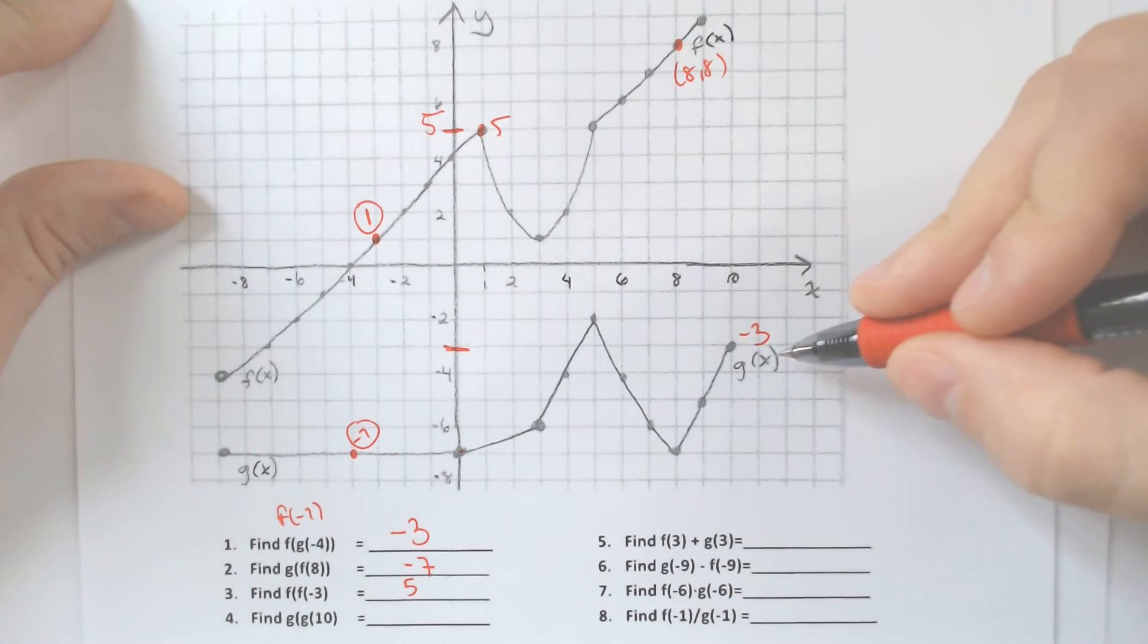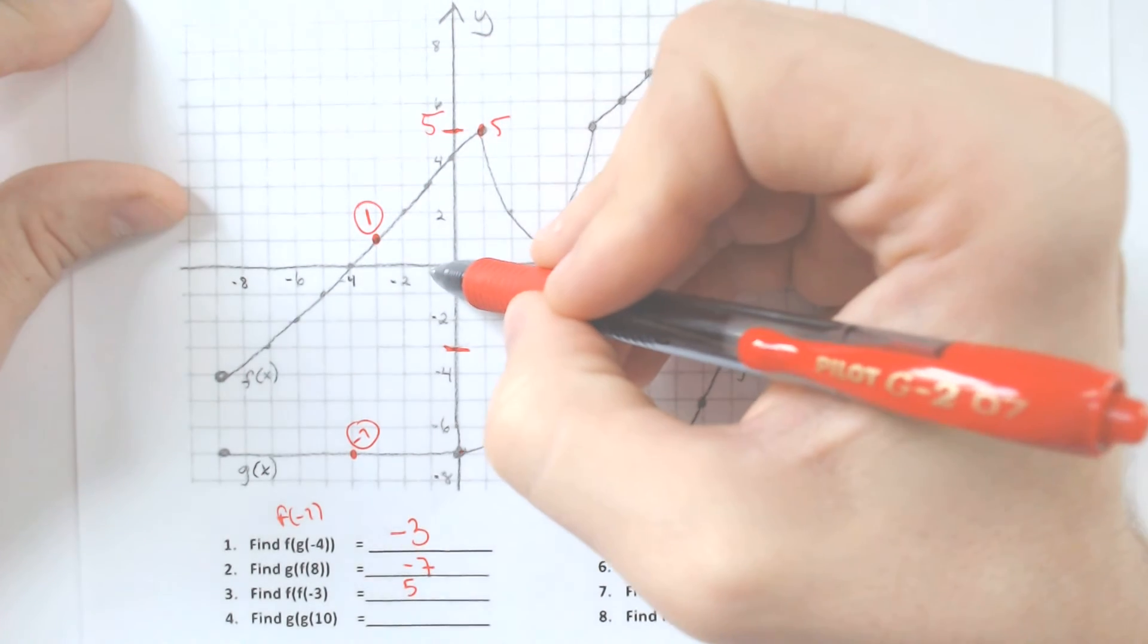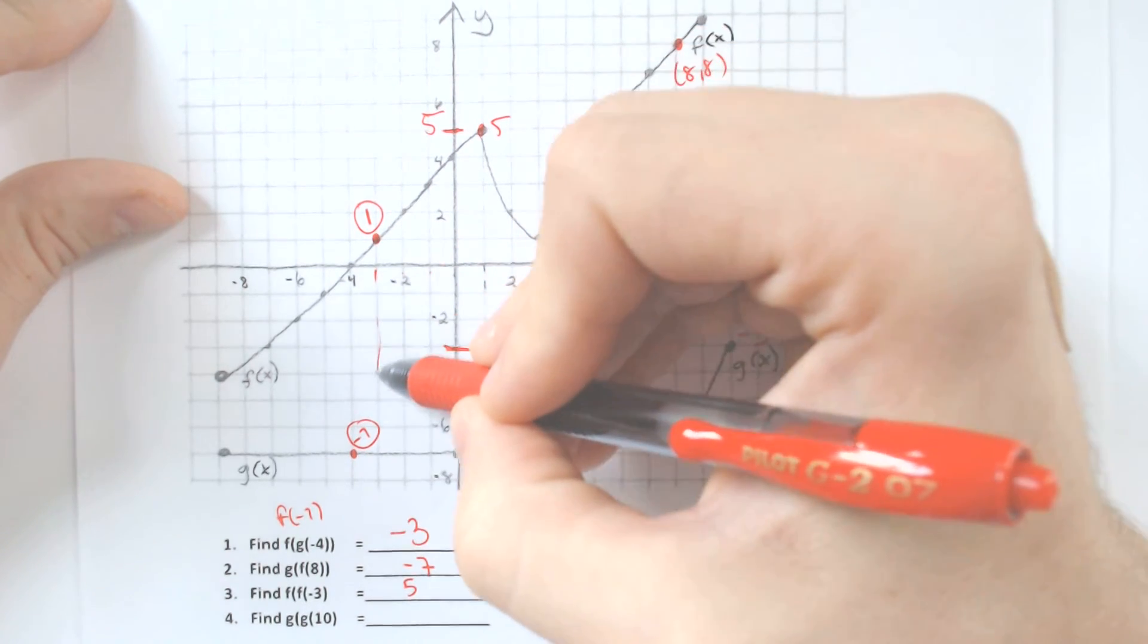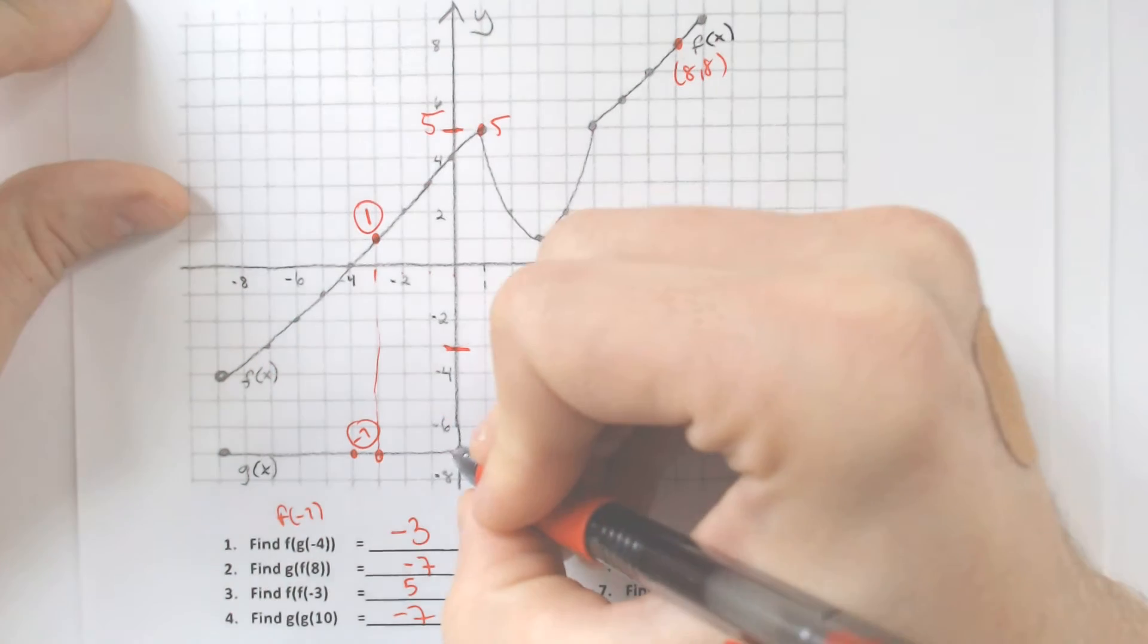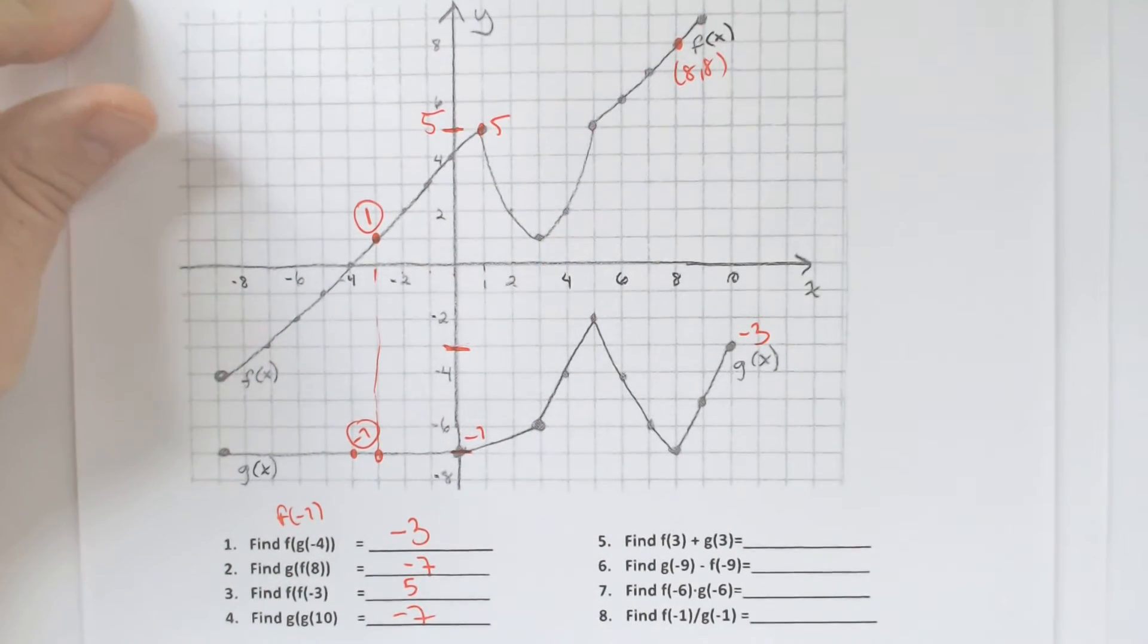And then we have to plug in negative 3 into the g of x function, which would be 3 to the left, which is all the way down here again at negative 7 for that y value.